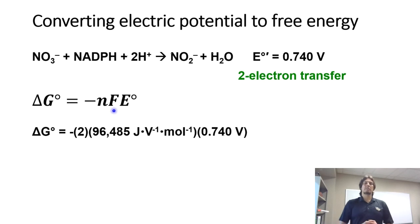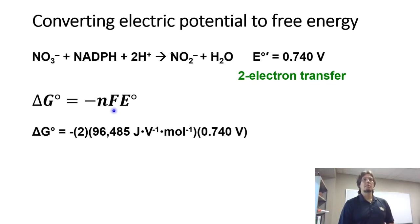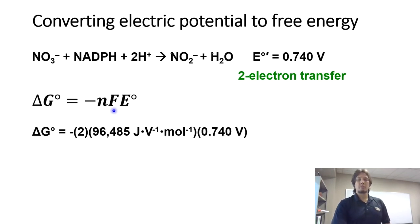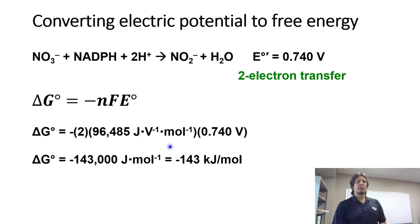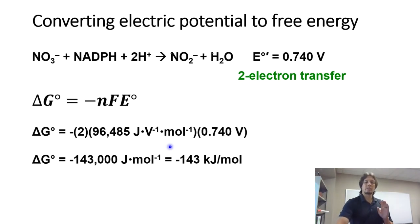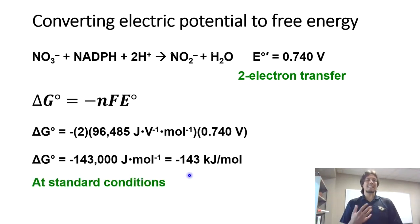We plug in Faraday's constant as 96,485 joules per volt per mole, and our calculated reduction potential of 0.740 volts. Volts cancel out, and when you do the math you get negative 143,000 joules per mole, or negative 143 kilojoules per mole. Remember, the 'not' symbol indicates this is at standard conditions.